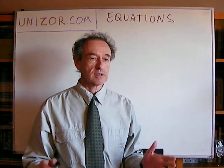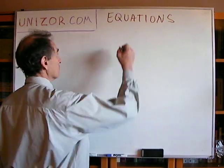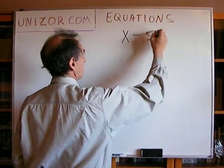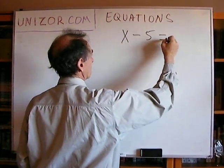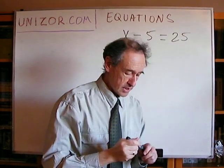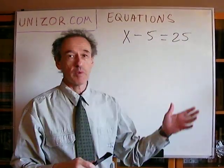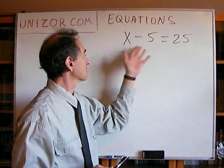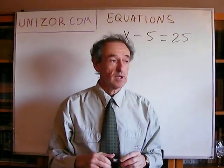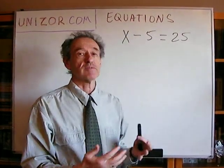So let's just consider something which everybody is familiar with — a very simple equation — and then we will think about what it means. Let's just consider this. It's a very simple equation, and everybody knows that the solution to this is x equals 30. Now, what does it actually mean? What does it mean that we have an equation?